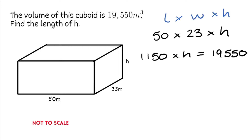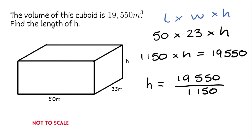We know that 1,150 multiplied by h gives us 19,550. To find h, we simply divide through by 1,150. So h equals 19,550 divided by 1,150. Typing that into the calculator, h equals 17. Looking back at the question, it asked for the length, so we include units: the answer is 17 metres.